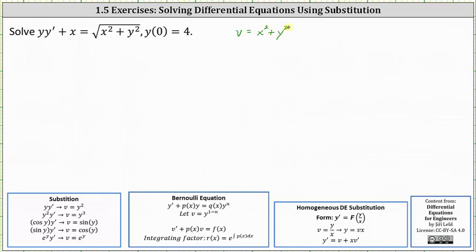If v equals x squared plus y squared, then v prime or dv/dx is equal to 2x plus 2y times y prime. To differentiate y squared with respect to x, notice we apply the chain rule.